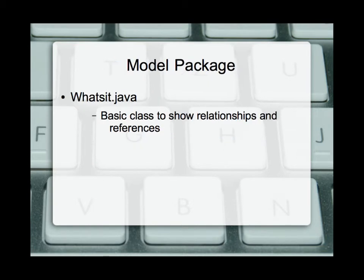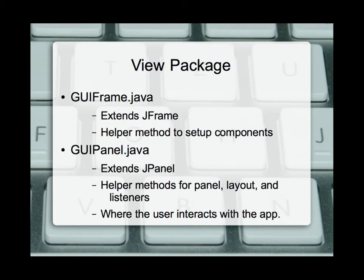In our model package we simply have whatsit.java — a placeholder class to show the relationship and the interaction between the view, the model, and the controller, with information passing multi-directionally in those areas. In our view package we have a bit more. We have GUI frame.java, which extends JFrame, giving it access to all of JFrame's components and methods. Additionally, there's a helper method to set up the components to make the frame work properly. In our GUI panel.java we extend JPanel, getting access to everything inside JPanel, with helper methods to set up our layout, our panel, and the listeners. This is where all the user interaction happens — 98% of user interaction occurs here inside the panel.